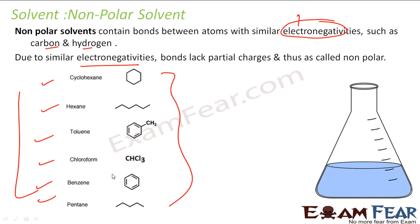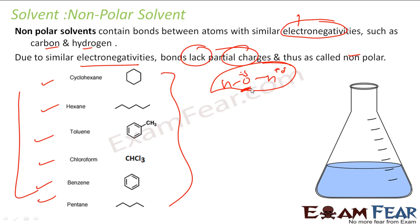Due to similar electronegativity, these bonds lack partial charge and they are nonpolar. For example, if you see water — oxygen is more electronegative than hydrogen, so oxygen gets slightly negative charge and hydrogen gets slightly positive charge, making it polar. But if you see cyclohexane or benzene, it is all carbon and hydrogen, so they do not get extra negative or positive charge. So they are nonpolar.